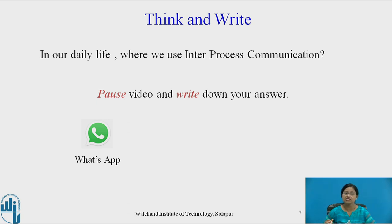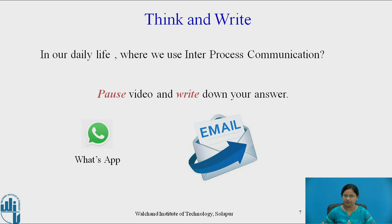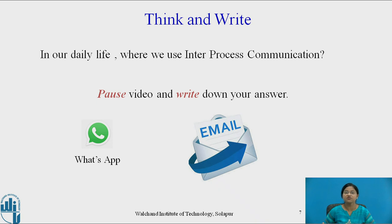Another example is email. We have a mailbox and we get messages from different mailboxes. There are many examples of inter-process communication which we use in our daily life, but WhatsApp and email are the most commonly used inter-process communication applications.